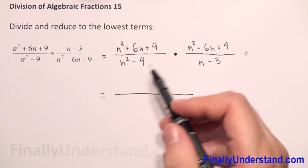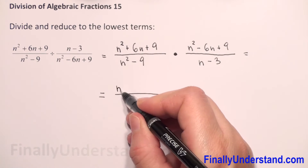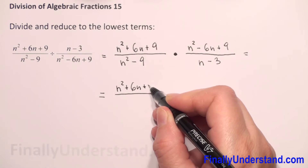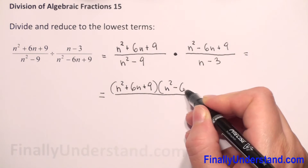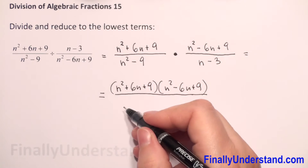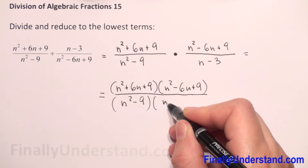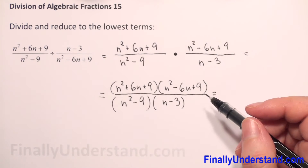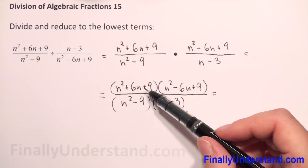Now we have multiplication of algebraic fractions, so we multiply numerator times numerator and denominator times denominator. We get n squared plus 6n plus 9 times n squared minus 6n plus 9, over n squared minus 9 times n minus 3. Next, we can reduce only when we have multiplication and the same expression in parentheses.